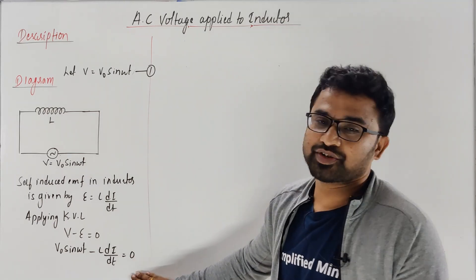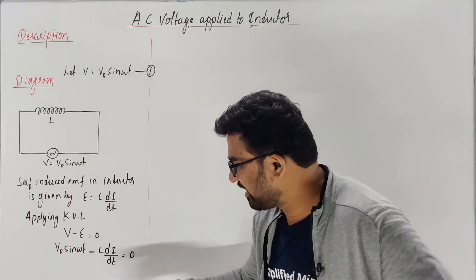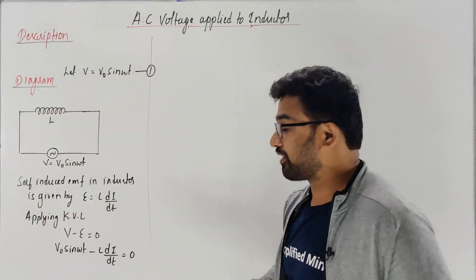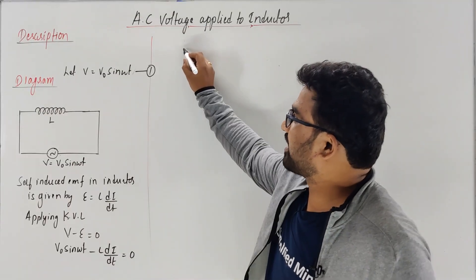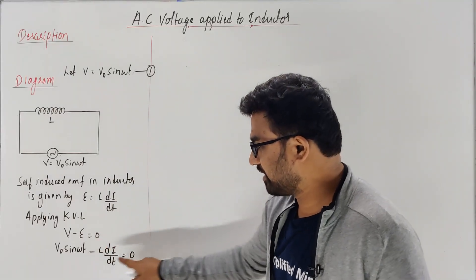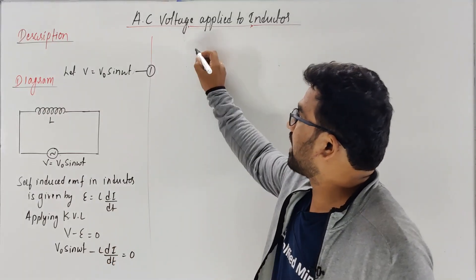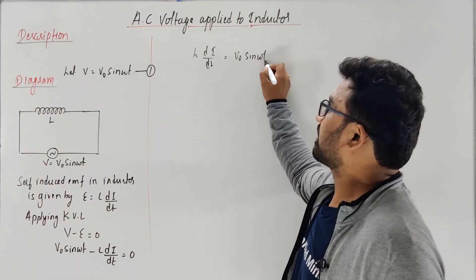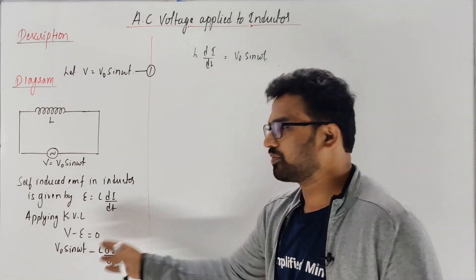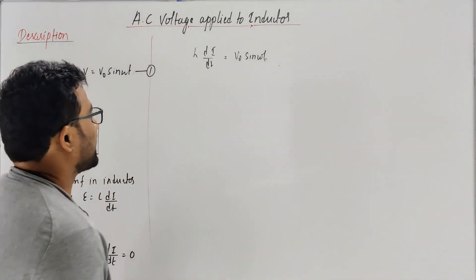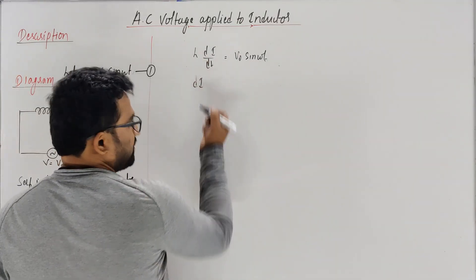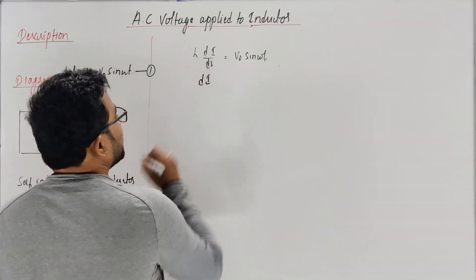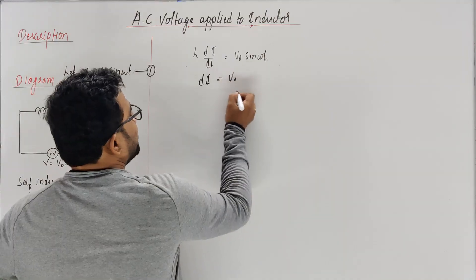We got the expression now. From this expression, we should derive the current. So: L × dI/dt = V₀ sin(ωt). Let's integrate. So dI/dt = (V₀/L) sin(ωt). Let's shift sides: L × dI = V₀ sin(ωt) × dt. Now I need to get the expression for dI: dI = (V₀/L) sin(ωt) dt.